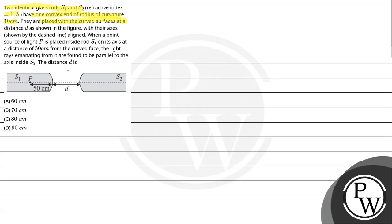They are placed with the curved surfaces at distance d as shown in the figure, with their axes shown by the dashed line aligned. When a point source of light P is placed inside rod S1 on its axis at a distance of 50 cm from the curved face, the light rays emanating from it are found to be parallel to the axis inside S2.